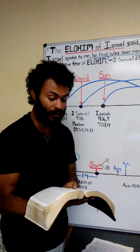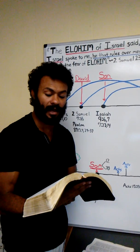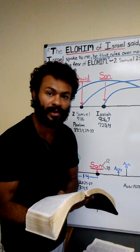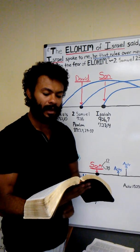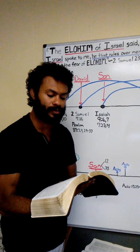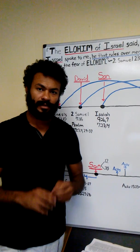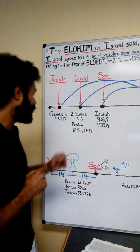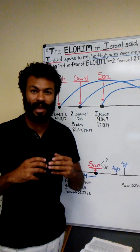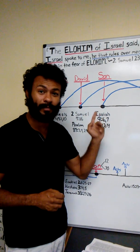Behold, the virgin shall conceive and bear a son, and he shall call his name Immanuel, which means El with us. Butter and honey he shall eat, that he may know to refuse the evil and choose the good. This is interesting because there's a prophesied son coming through the line of David who would be Emmanuel, or El with us—with Israel from the house of David.